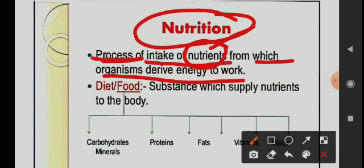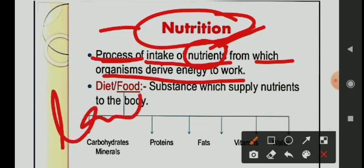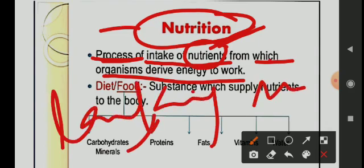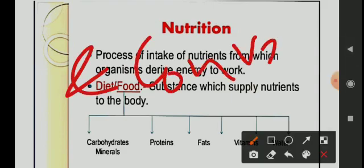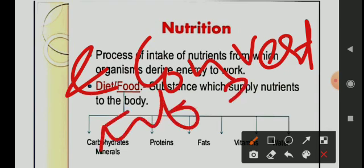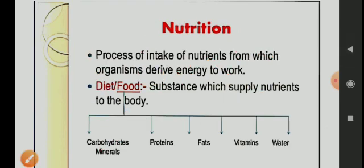Now, what are nutrients? Nutrients are the substances that provide energy. We have different types of nutrients. In simple form: taking in food and converting it into energy is called nutrition. I think nutrition you will understand.